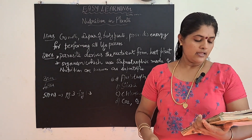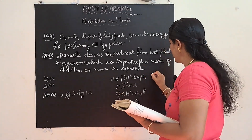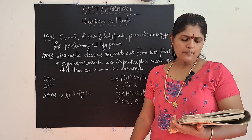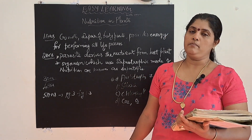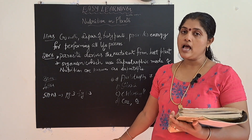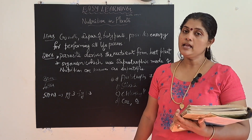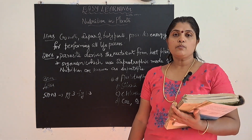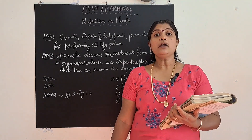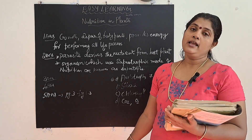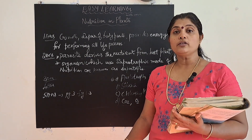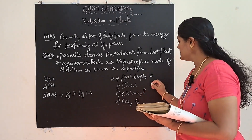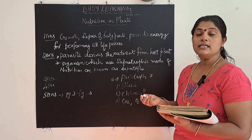The seventh question — name the following. Part A: a parasitic plant with yellow, slender, and tubular stem. In the last video I explained about parasitic mode of nutrition — a plant that does not have chlorophyll, is yellowish in color, and climbs on the host plant. The name is Amarbel, otherwise known as Cuscuta.